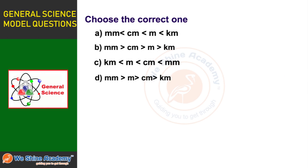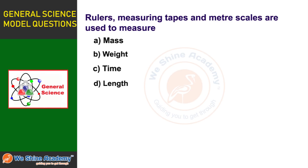The first question is: Choose the correct one. Option A: millimeter less than centimeter less than meter less than kilometer. Option B: millimeter greater than centimeter greater than meter greater than kilometer. Option C: kilometer less than meter less than centimeter less than millimeter. Option D: millimeter greater than meter greater than centimeter greater than kilometer. The answer is Option A: millimeter less than centimeter less than meter less than kilometer.